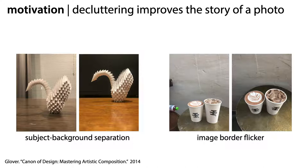Our eyes are drawn to regions of high contrast, so light on dark and dark on light. Thus, contrast around the subject will help clarify and declutter the overall image, called subject-background separation. Whereas contrast in other regions, especially around the border of the image, will distract, causing the eye to be drawn away from the focal subject, called image-border flicker.